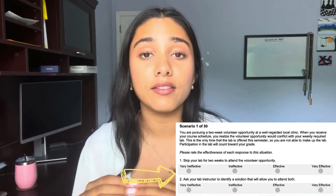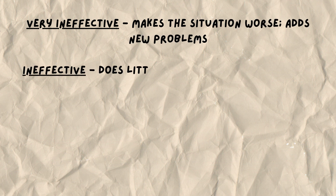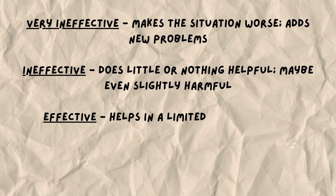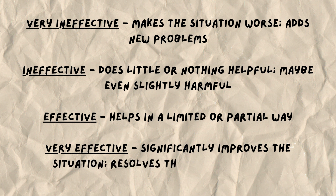You're going to have to rank these solutions on a four-point scale. First, we have very ineffective — this basically makes the situation worse or adds a new problem. We also have ineffective, which does little or nothing helpful, maybe even slightly harmful. We also have effective, which helps in a limited or partial way. And lastly, very effective, which significantly improves the situation or resolves the issue thoroughly. Let's talk through a quick example so you understand what the test format is.